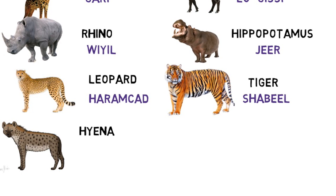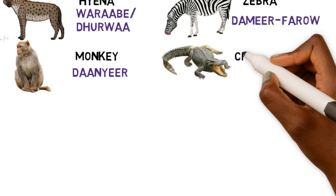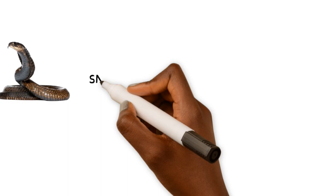A hyena is Warawe or Rua, while a zebra is Tamerfaraw. A monkey is Danyar, while a crocodile is Ihass.